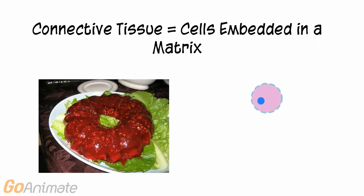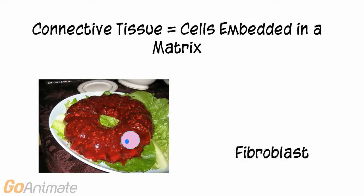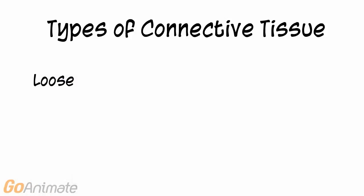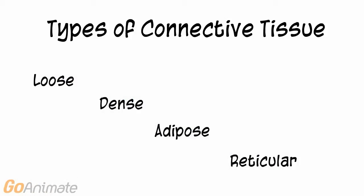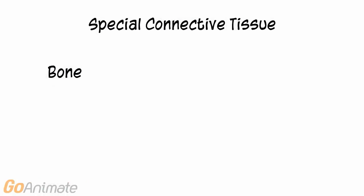If we were to summarize connective tissue, we could say that its basic structure is cells embedded in a matrix, a bit like cranberries and jello. One type of connective tissue cell is the fibroblast. Types of connective tissue include loose, dense, adipose, and reticular. There is also a category of special connective tissue consisting of bone, blood, and cartilage.